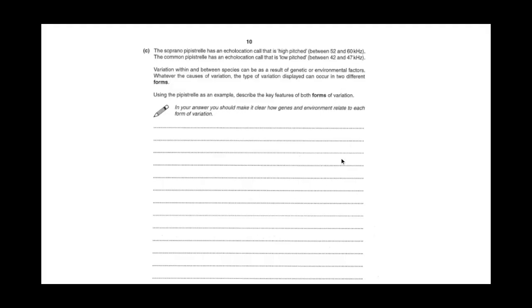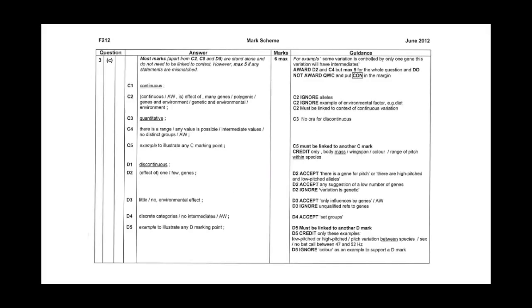The answer is still very informative of what we need to know. We get marks for mentioning continuous data that is polygenic and quantitative (numerical data), with a range of intermediate values. For discontinuous, only one or a few genes, little or no environmental impact, discrete categories with no intermediate values. It's really good to use data to support your answers, especially on the new spec.